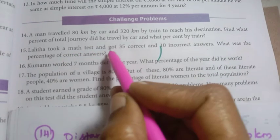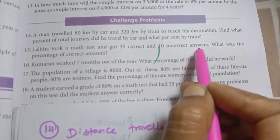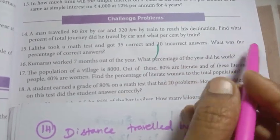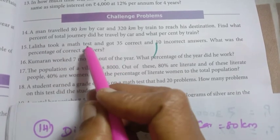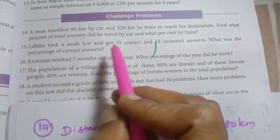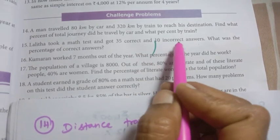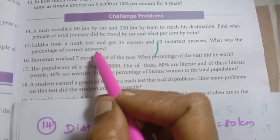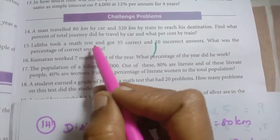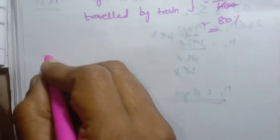15th problem: A student got 35 correct and 10 incorrect answers. What was the percentage of correct answers? Number of correct answers is 35, number of incorrect answers is 10. So find the percentage of correct answers.